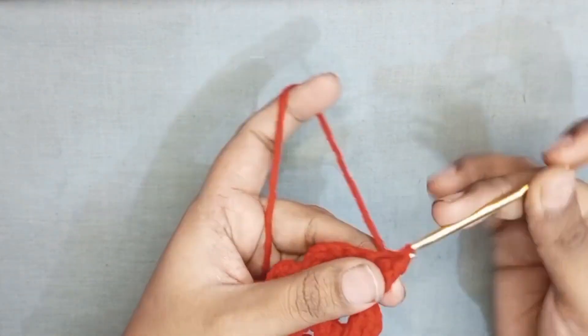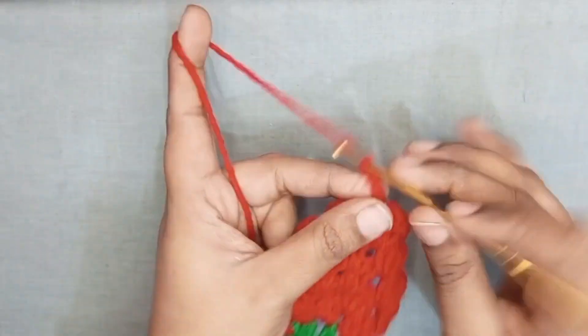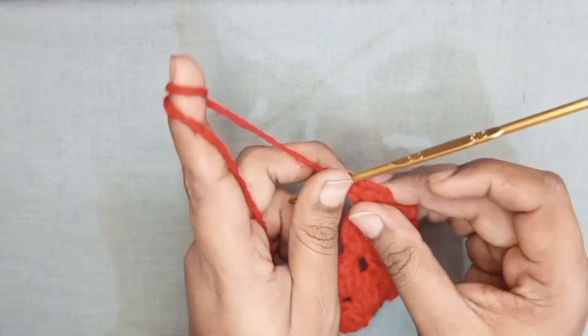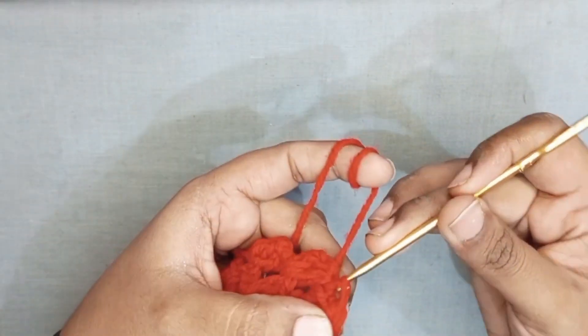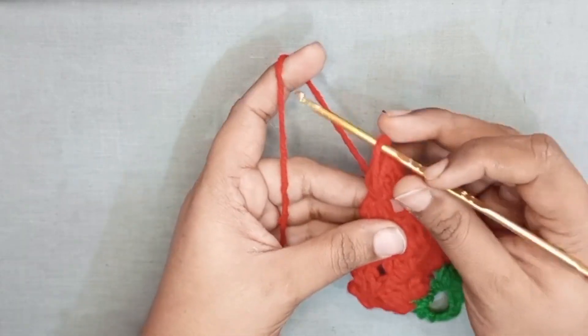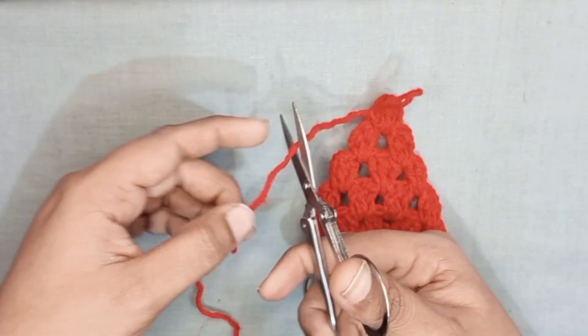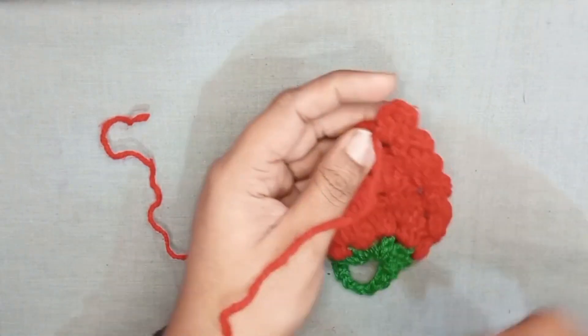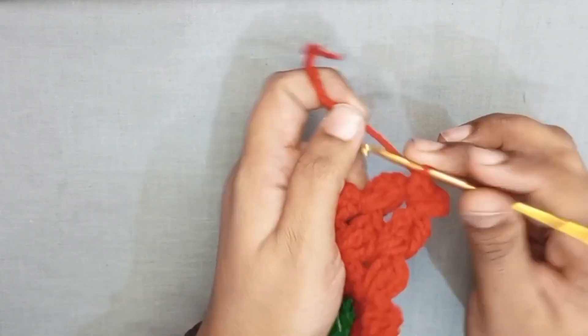The next round we make only one cluster. After making one cluster, slip stitch with the same stitch. Chain one and cut the yarn. Back side, pull the yarn and make knot.